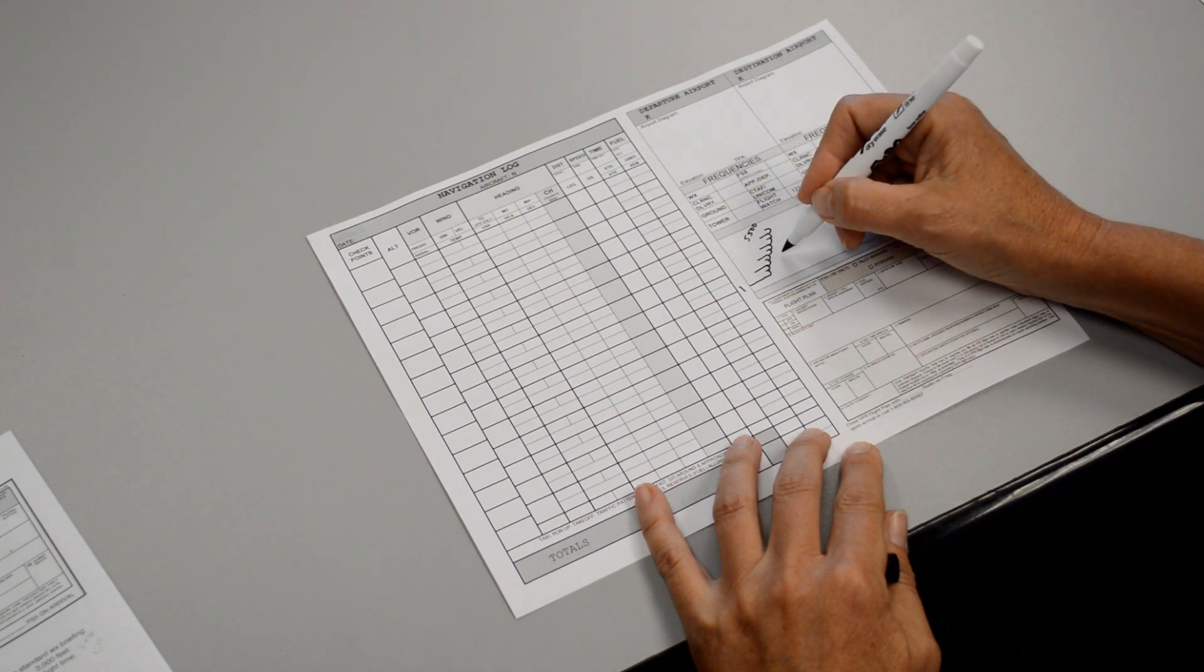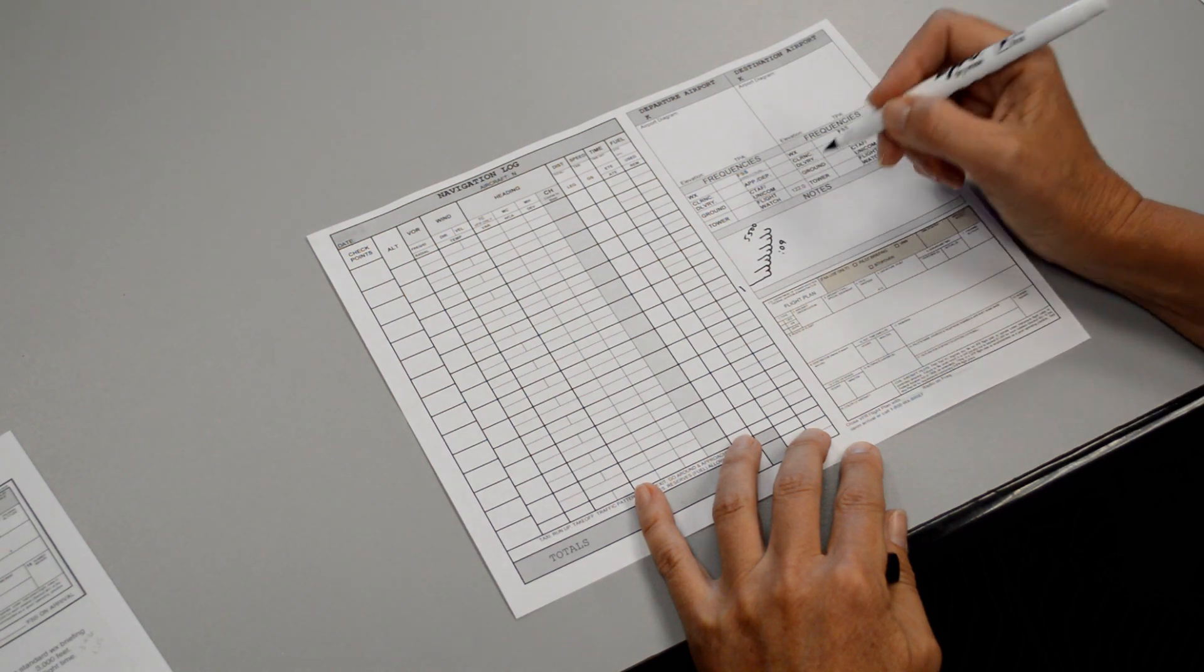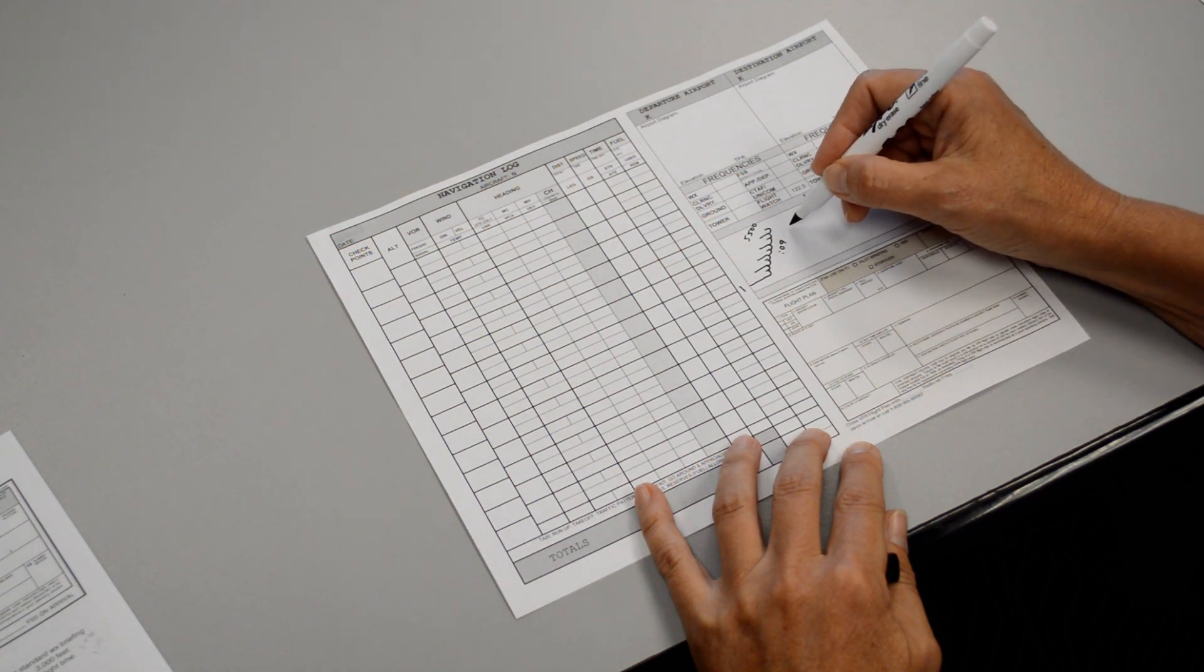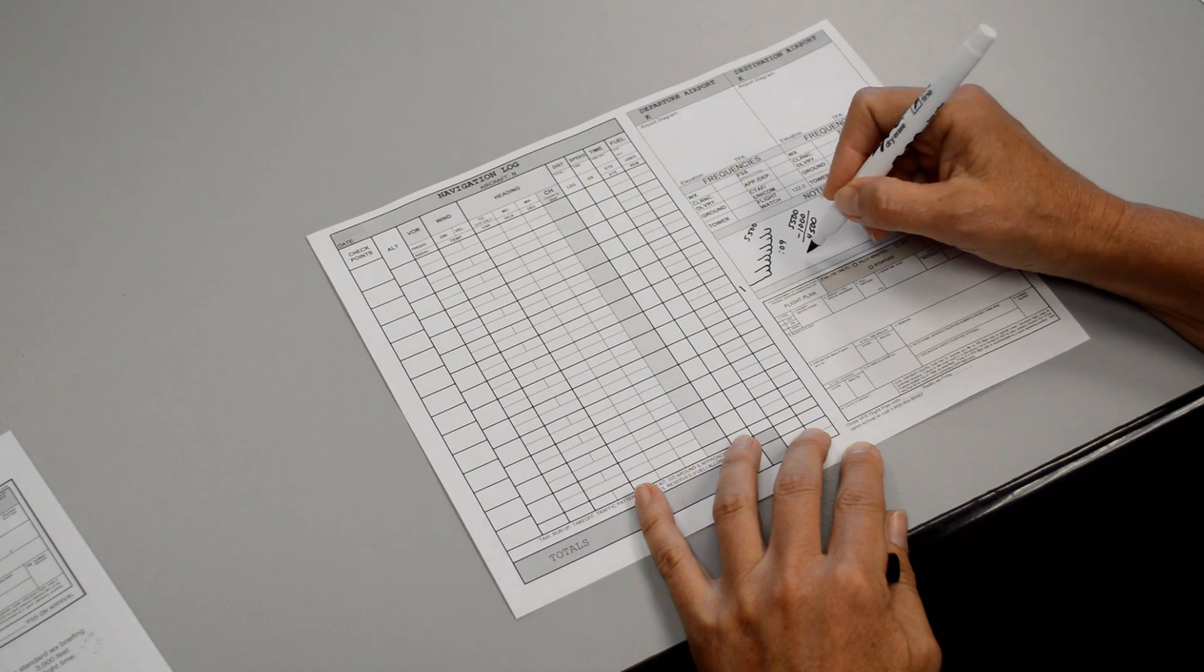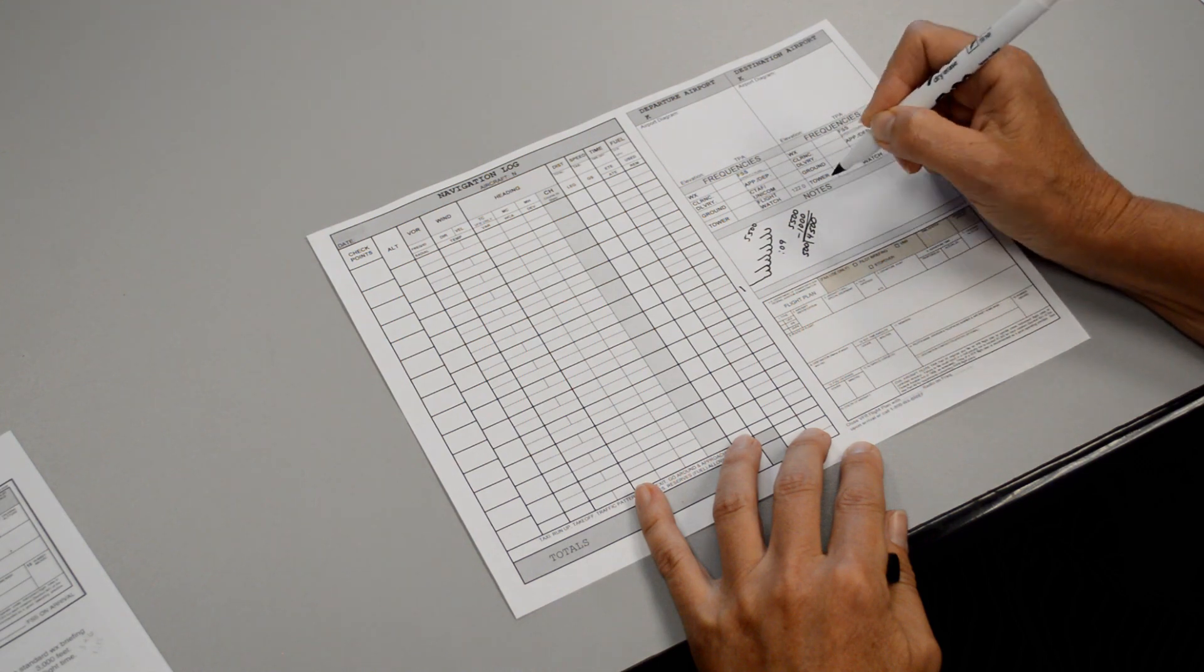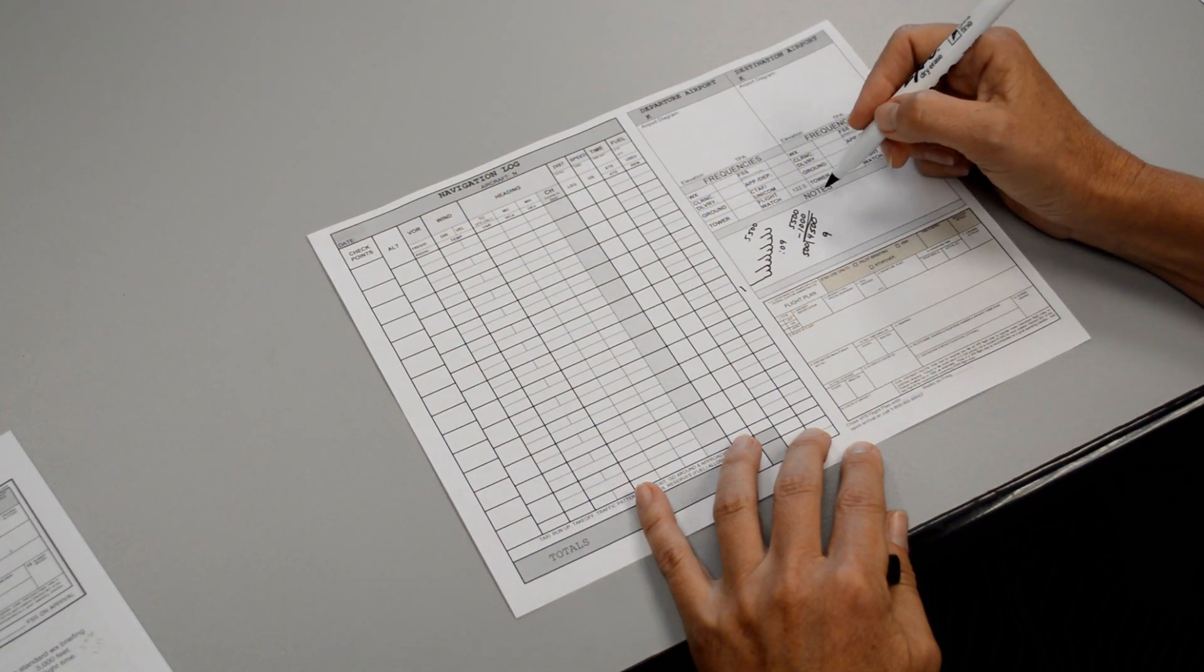So it will take us about 9 minutes to reach our altitude. You could also realize that 5,500 minus the 1,000 feet we started at gives us 4,500 feet to climb and we could just simply divide that number by 500 and we would also get 9. So you can do it either way.